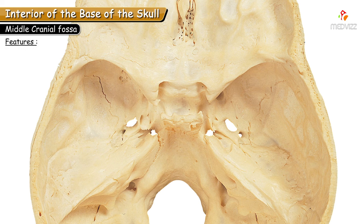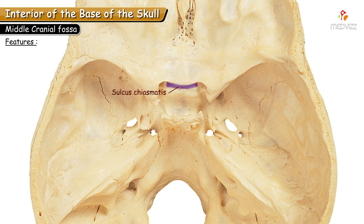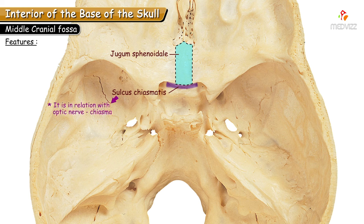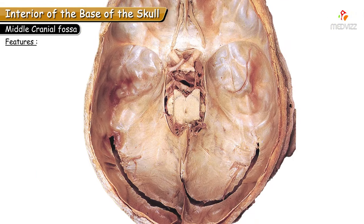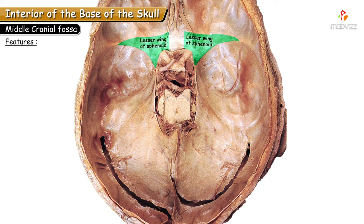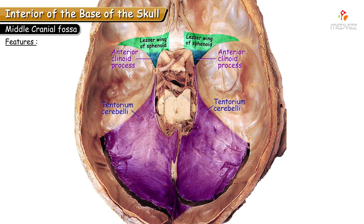Moving on to the features, we begin with the body of the sphenoid at the center. It contains the sulcus chiasmaticus, a transversely running groove just behind the jugum sphenoidale. This sulcus is named after its relation with the optic chiasma — the crossing of the optic nerve — but importantly, the optic chiasma never comes in contact with the sulcus chiasmaticus; it lies posterior and superior to the sulcus. Tracing along the medial side of the posterior border of the lesser wing of sphenoid, the tooth-like projections are the anterior clinoid processes, which give attachment to the free margin of the tentorium cerebelli.